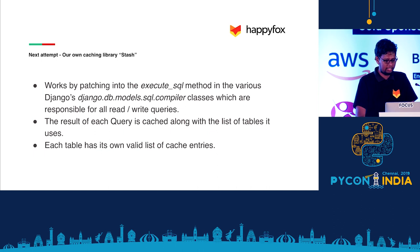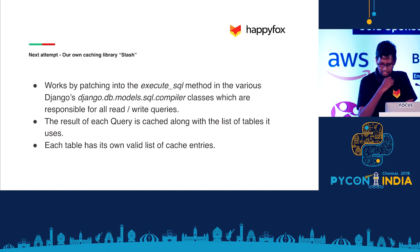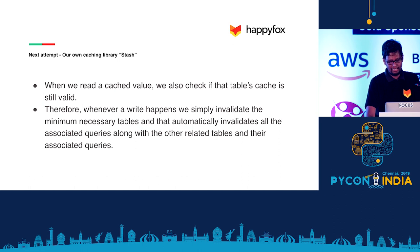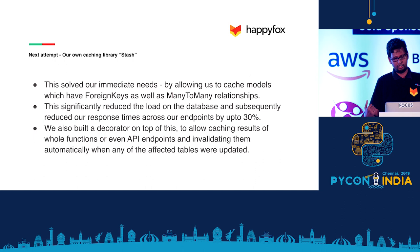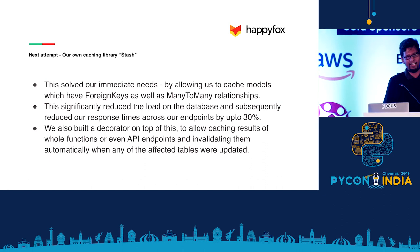Django's database layer has a set of classes called SQL compilers, which Django uses to compile ORM lines — something like objects.filter — into an actual database query. Especially if you have joins, that join query is parsed by the SQL compiler class. There's a method called execute_sql which has the raw parsed query, and we use that to get all the tables and automatically invalidate things. This really solved all of our performance issues — we dramatically reduced database load, most endpoints became extremely fast, and we wrote a small abstraction on top to automatically cache endpoints and invalidate whenever a table was updated.